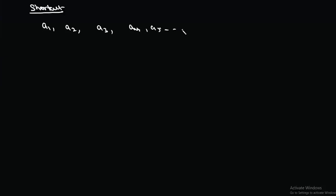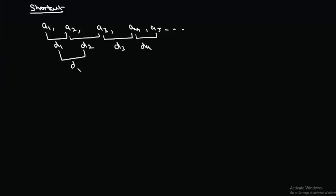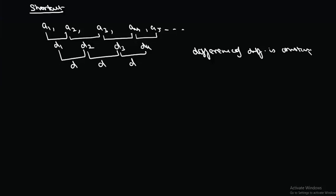Today we discuss a shortcut used in problems where the difference of difference is constant. You'll find many problems where a series a1, a2, a3, a4, a5 is given. If we find the difference: a2−a1 = d1, a3−a2 = d2, a4−a3 = d3, a5−a4 = d4, and then take the difference of differences: d2−d1, d3−d2, d4−d3 are all equal to d, then the difference of difference is constant.